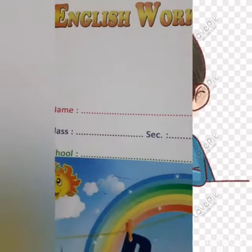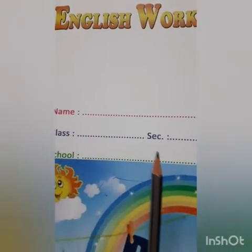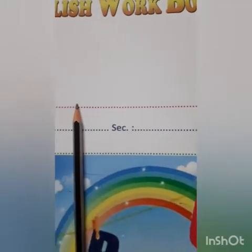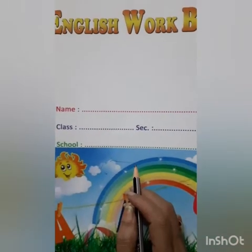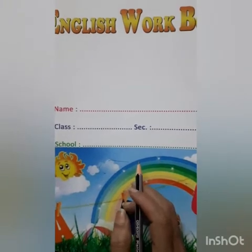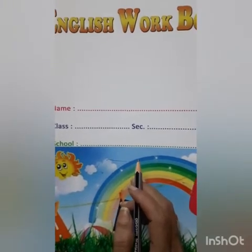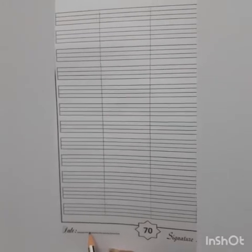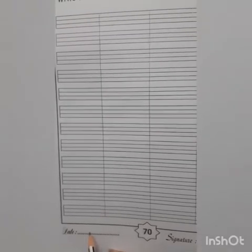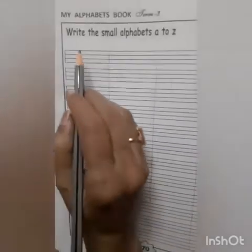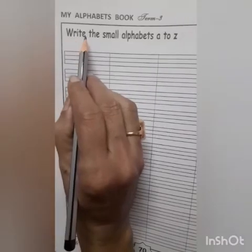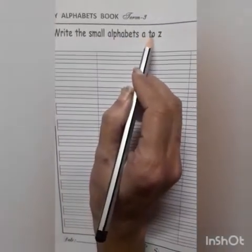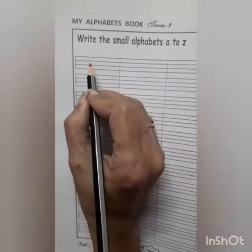Let's start writing. Take out your English word book, pencil and eraser. Now come to task number 70. At first you will write here to test it. See written here: write the small alphabets A to Z. So let's start writing.